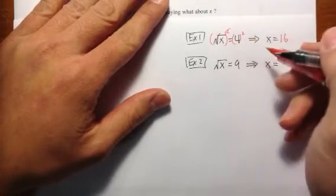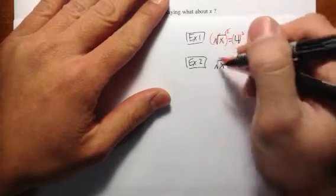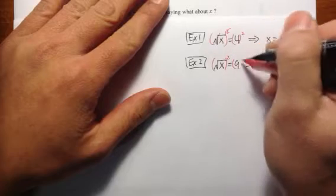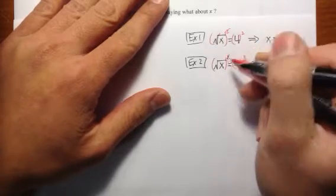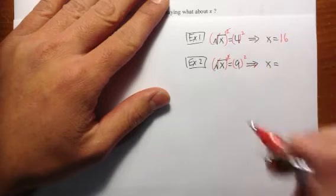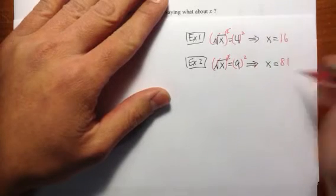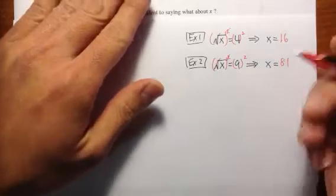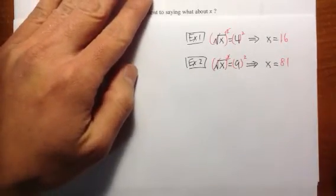Well, we can do the same procedure. We can square both sides. Square and square root cancel out. 9 squared means 9 times 9, which is 81. So this is how you deal with equations with square roots.